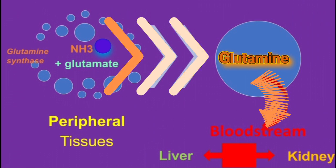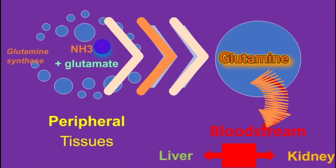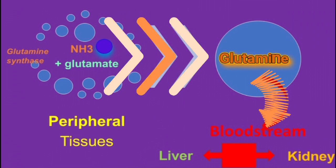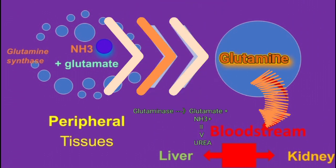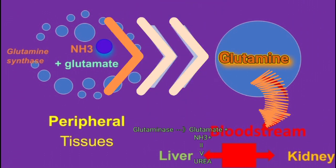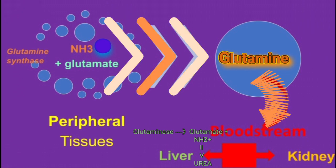The glutamine formed can be released into the bloodstream and can be picked up by either the liver or the kidney. In the liver, glutamine can be broken down by glutaminase, and the ammonia released from glutamine can easily be detoxified by incorporating it into urea through the urea cycle.